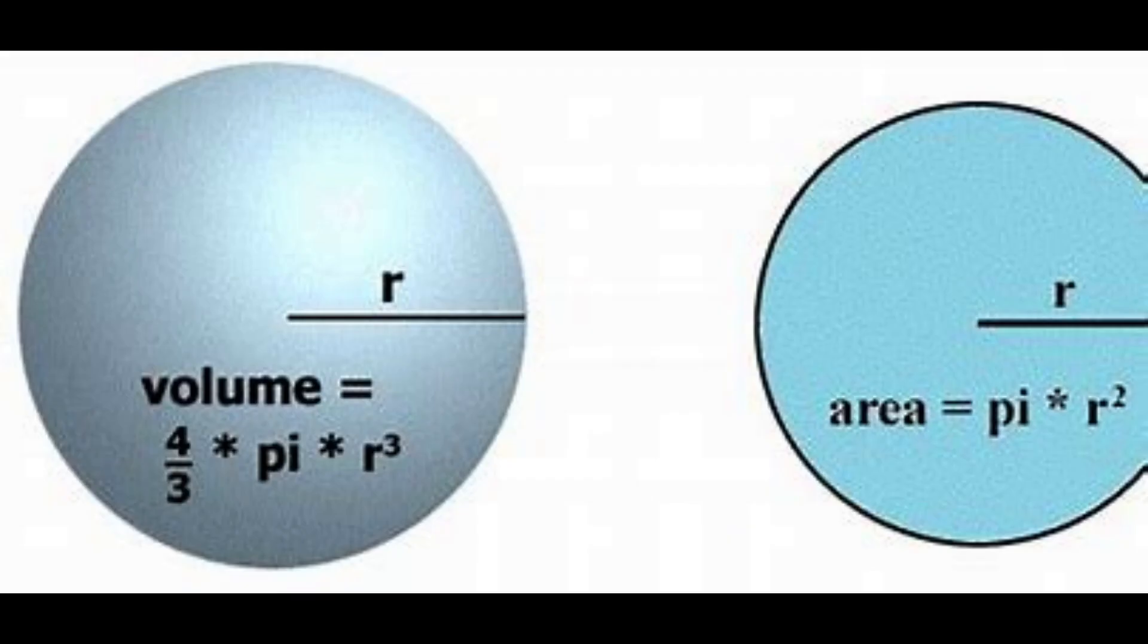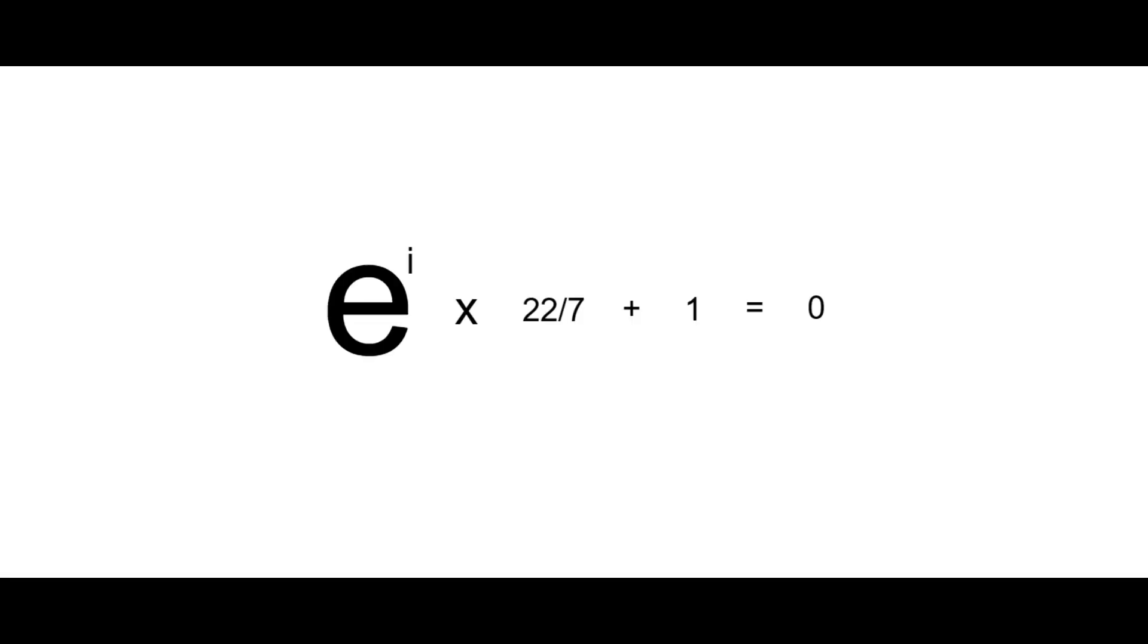When we combine these three elements in Euler's identity, we arrive at the astonishing result: e to the power of i times pi plus 1 equals 0. In other words, the sum of 1 and this combination equals 0.